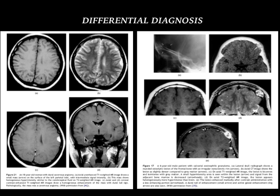This is again, if you look at the appearance, an extra-axial lesion, well-defined, showing a dural tail, which is clearly seen even in the coronal post-contrast T1-weighted images. Imaging-wise we would give it as a meningioma, but this is a proven case of dural cavernous angioma.